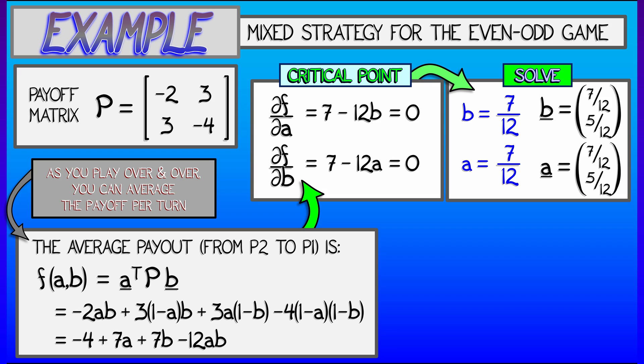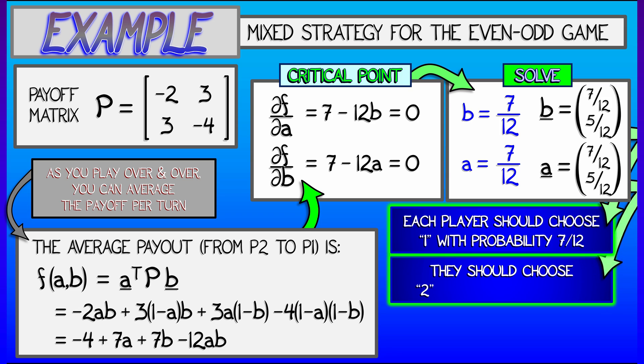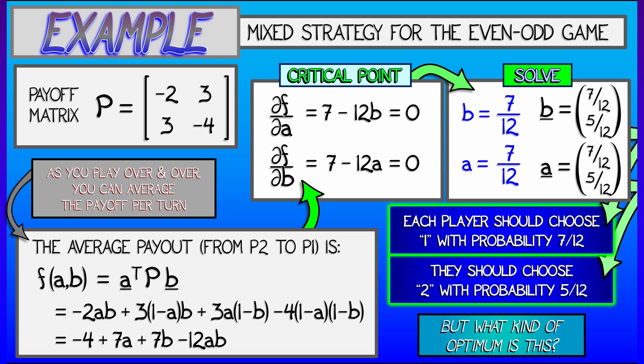This means that the probability vectors for player one and player two are going to be the same, 7 twelfths and 5 twelfths. This means that at this optimum, each player should choose to put out one finger with probability 7 twelfths and put out two fingers with probability 5 twelfths. That, I did not see that coming. That was not obvious.